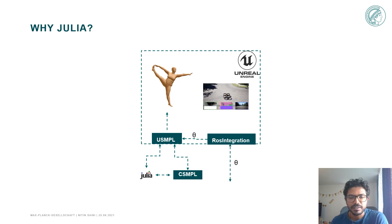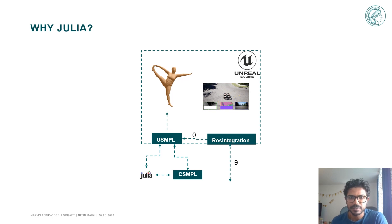The final architecture is shown here. The SMPL parameters at every frame are received by the ROS integration plugin and then passed on to the uSimple plugin. The uSimple plugin calls some Julia base code and the csimple module, which is the Julia implementation of SMPL, and then it calculates the vertices.